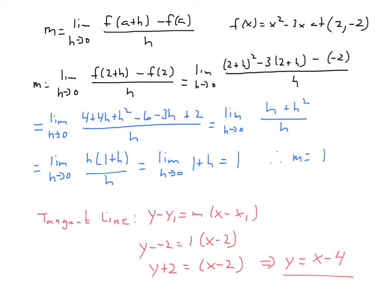Another form for finding the slope of the tangent line is: the slope equals the limit as h approaches 0 of f(a plus h) minus f(a) over h. This should look familiar from the last section. We can use it here: let f(x) equal x squared minus 3x, going at the point (2, −2). In this case, a equals 2 — that's the x-coordinate.